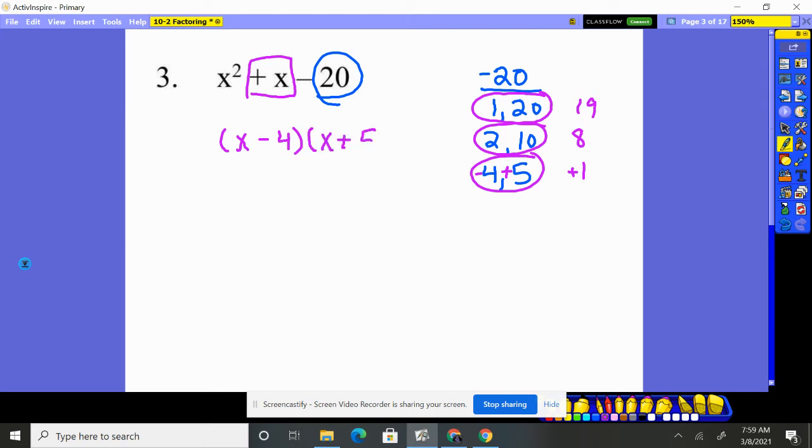x plus the 5, because the difference between a positive 5 and negative 4 is positive 1, and negative 4 times that positive 5 will give you negative 20.